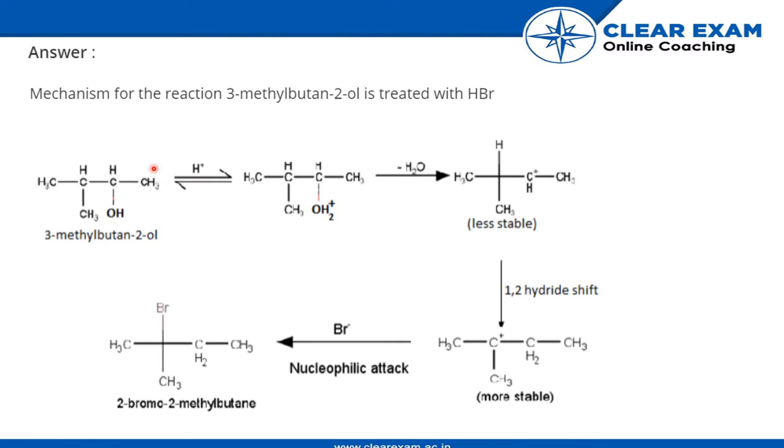First of all, this is the reactant. From HBr, we know that HBr is composed of H+ and Br-, so H+ will—the electron pair from the oxygen will react on this H+, so this will be formed with OH2+.